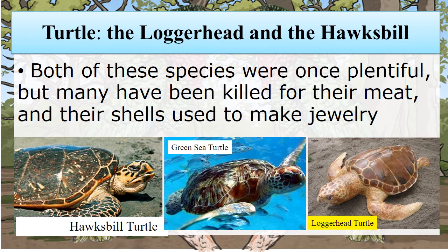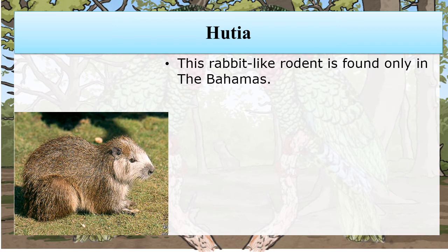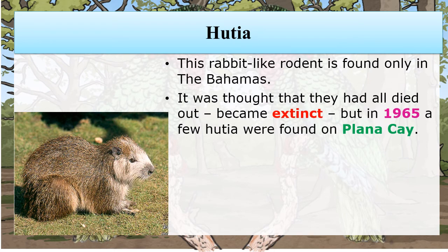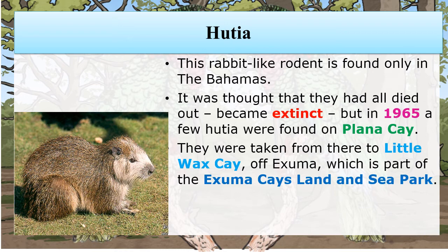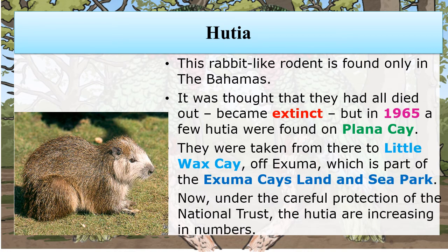The Loggerhead and the Hawksbill Turtles. Both of these species were once plentiful, but many have been killed for their meat, and their shells used to make jewelry. The Hutia is a rat-like rodent found only in the Bahamas. It was thought they had all died out or become extinct, but in 1965 a few Hutia were found on Planter Key. They were taken to Little Wax Key off Exuma, which is part of the Exuma Keys Land and Sea Park. Now, under the careful protection of the National Trust, the Hutia are increasing in numbers.